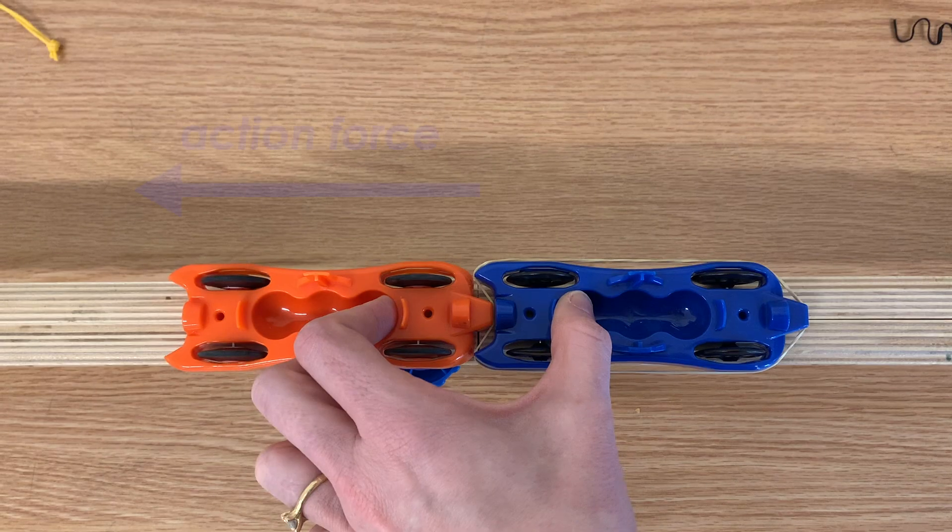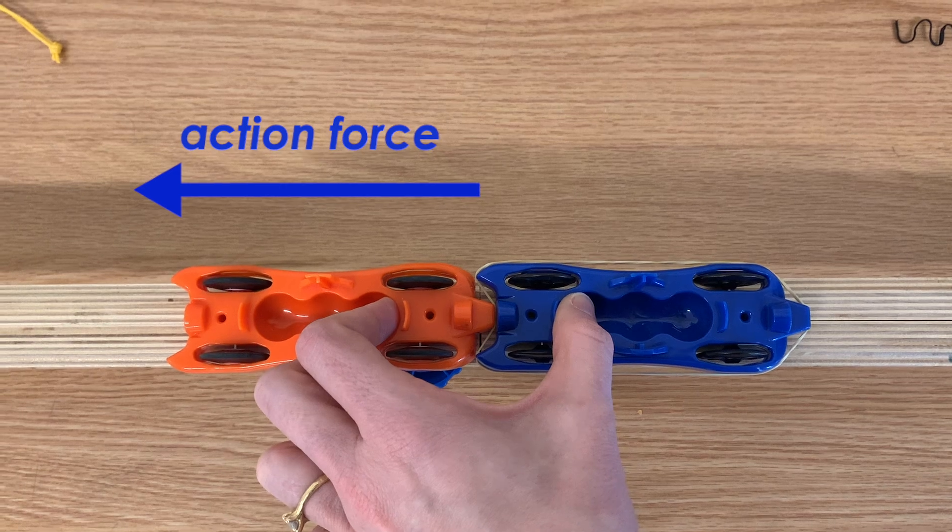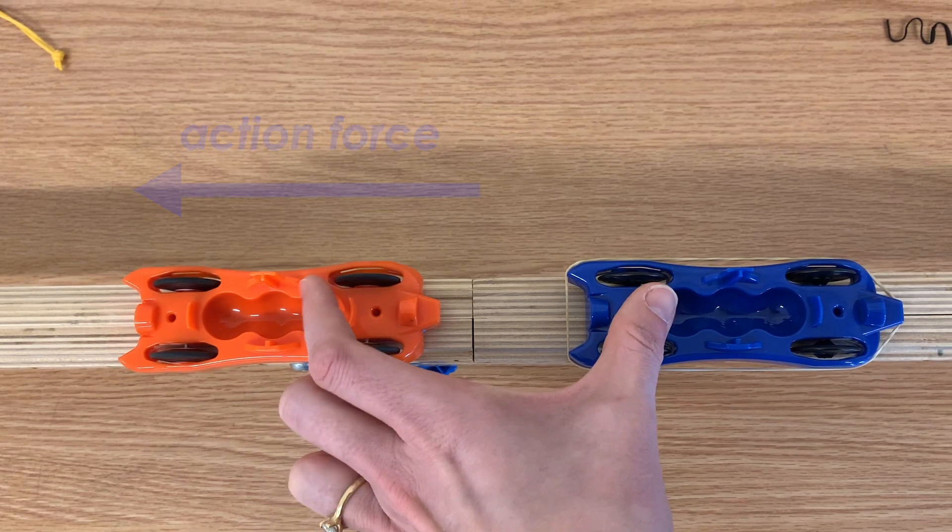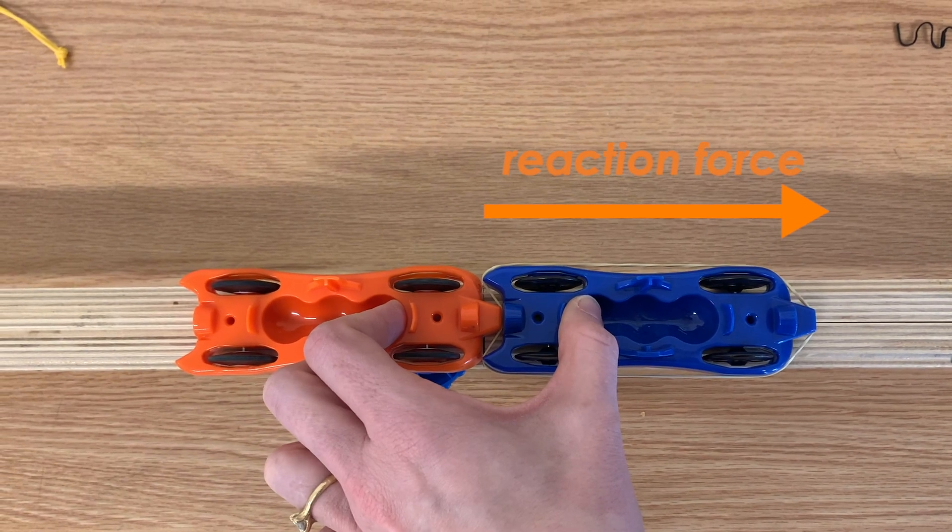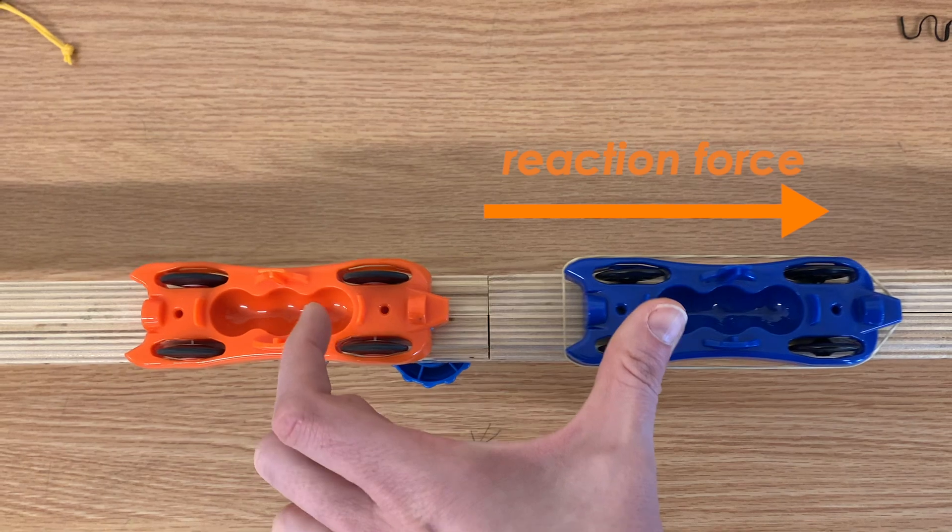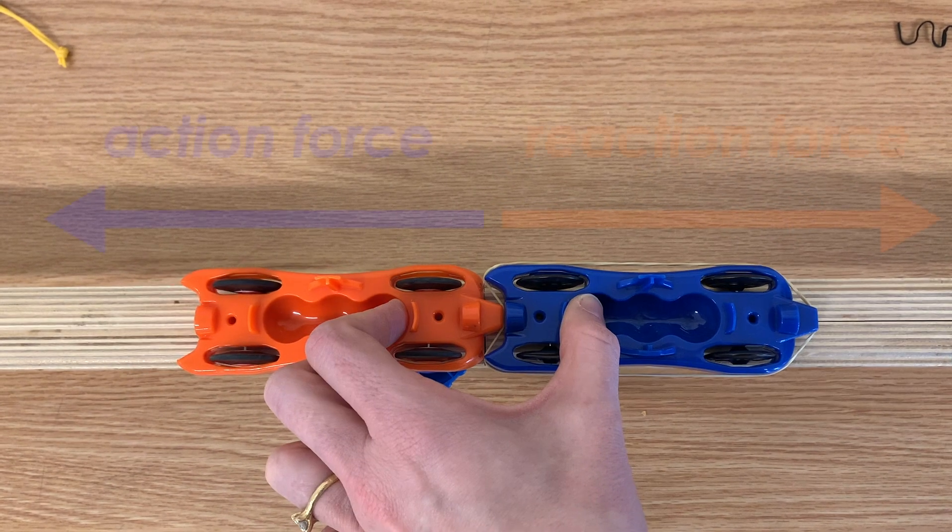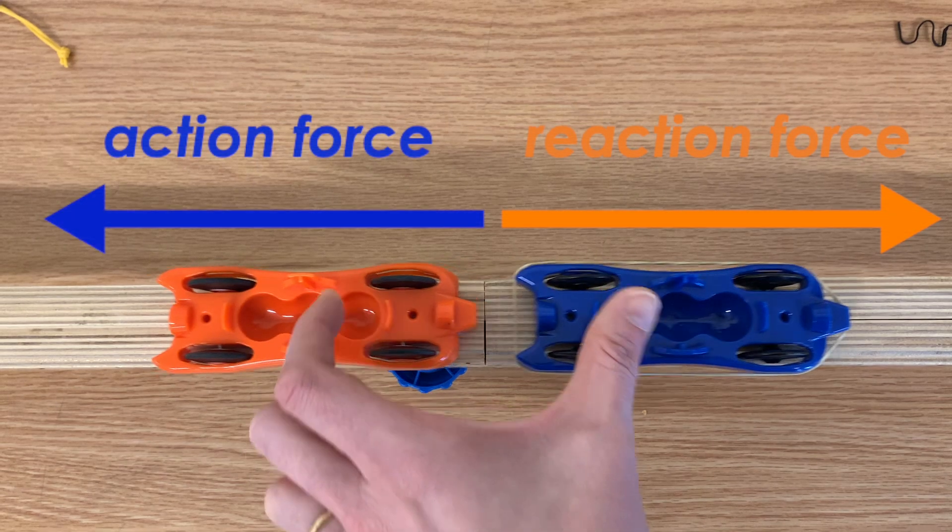The rubber band applied a force to the orange car when it rebounded. That was the action force. At the same time, the orange car applied a force to the rubber band. That was the reaction force. The action and reaction forces have equal magnitudes or strengths.